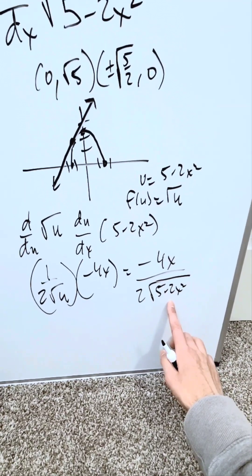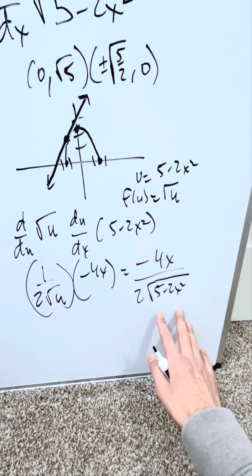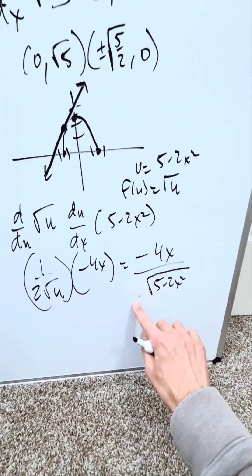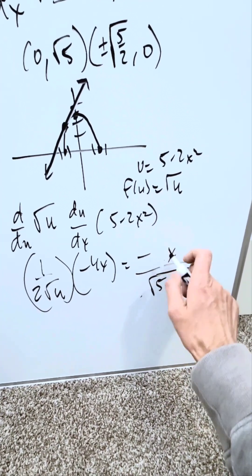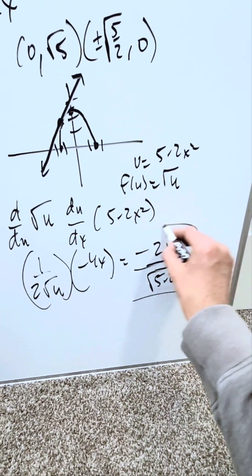I've determined a function which is the derivative of my original function. You can simplify this and you'll have the end result: -2x divided by √(5-2x²) is the derivative of that function.